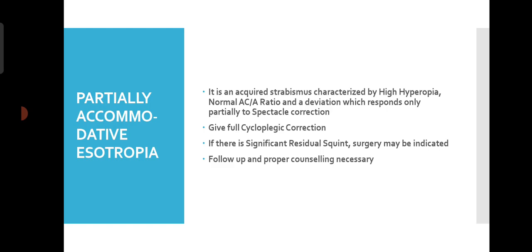Partially Accommodative Esotropia is an acquired strabismus associated with hyperopia and a normal AC/A ratio, where the deviation responds only partially to spectacle correction. With spectacle correction, we cannot fully correct this type — there will be residual Esotropia even after prescribing high plus power after cycloplegic refraction. We give full cycloplegic correction, and if there is significant residual squint, we can counsel for surgery, but only if it is required. Proper follow-up and counselling are very much necessary for these patients.